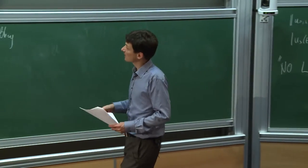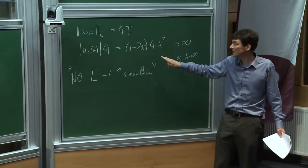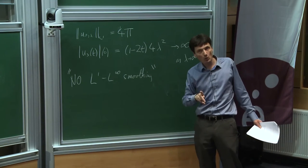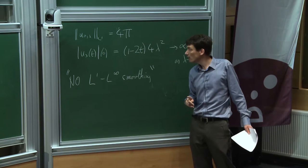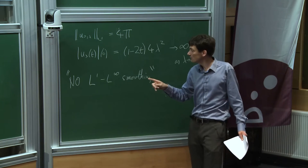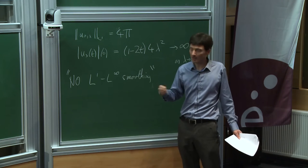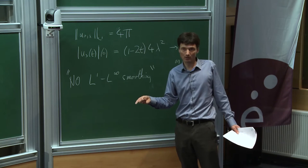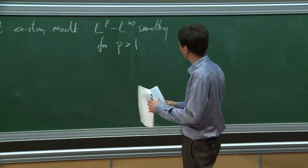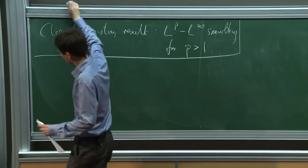What we need is an L¹–L^∞ smoothing estimate, which by the previous example cannot exist in the traditional sense. Here is the idea: normal L¹–L^∞ smoothing says give me the L¹ data and the time and I give you an L^∞ bound — which is false. What we do instead: you give me the bound you want and you give me L¹ data, and I'll give you the time you have to wait. By making that small twist it actually makes everything work.